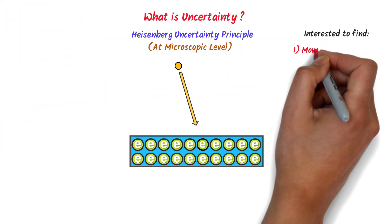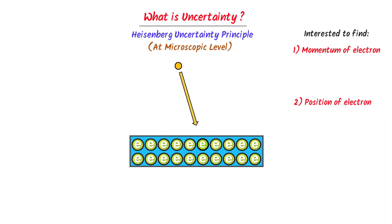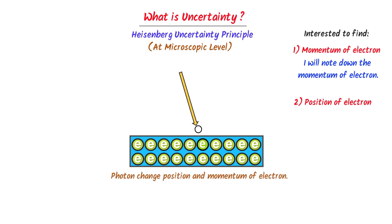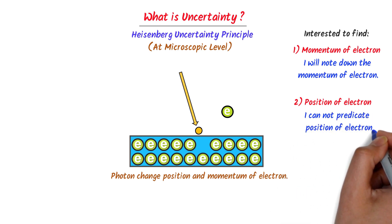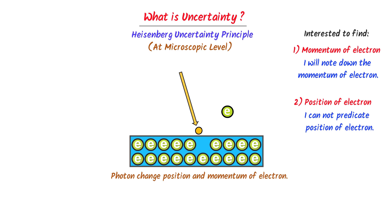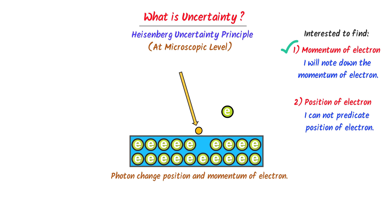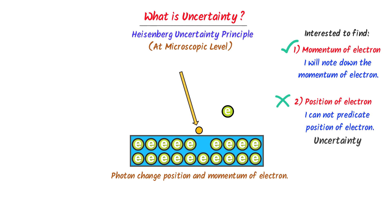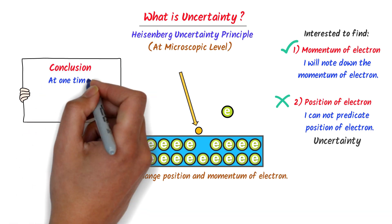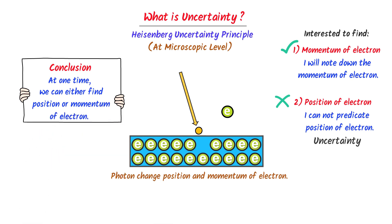Secondly, if I am interested to find the motion and then position of the electron, I will again incident light on the metal surface and quickly note down the momentum of the electron. But the photon of light will suddenly change its position, and I will not be able to predict its position, because the electron moves with the speed of light. Thus here I can only measure the momentum of the electron, but I am uncertain about its position. Therefore, overall, we draw this conclusion that at one time we cannot find the position and momentum of an electron simultaneously. So this is the whole concept of uncertainty — or this is the concept of Hassenberg Uncertainty Principle.